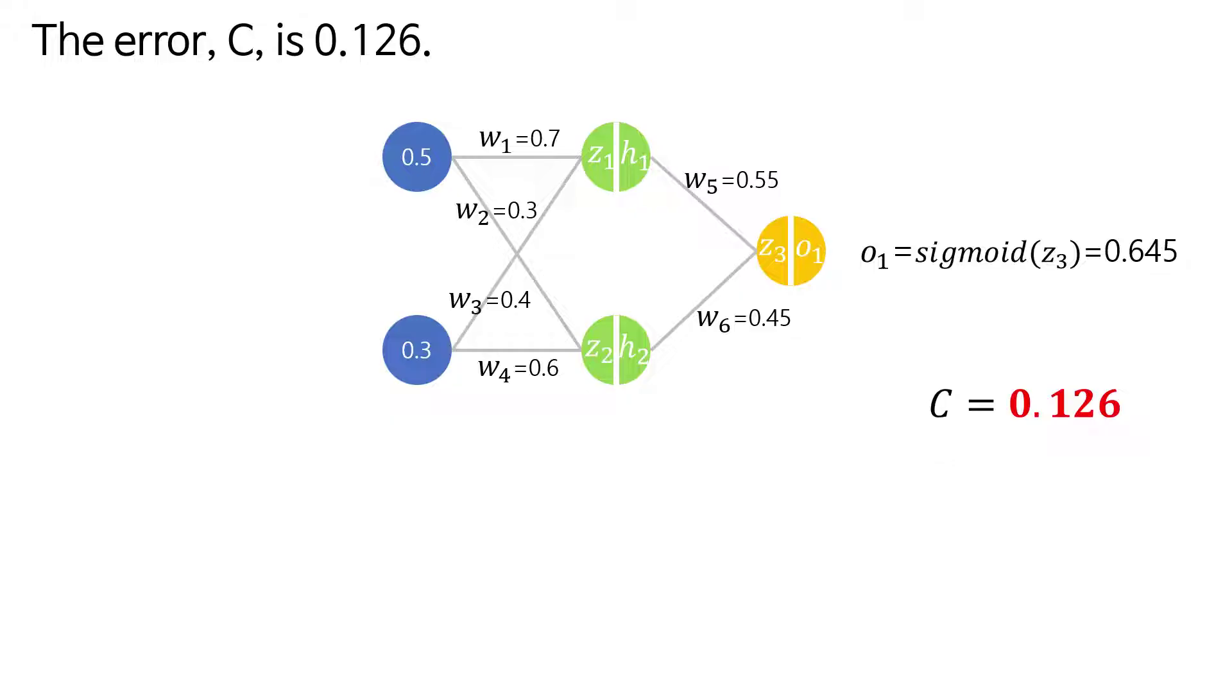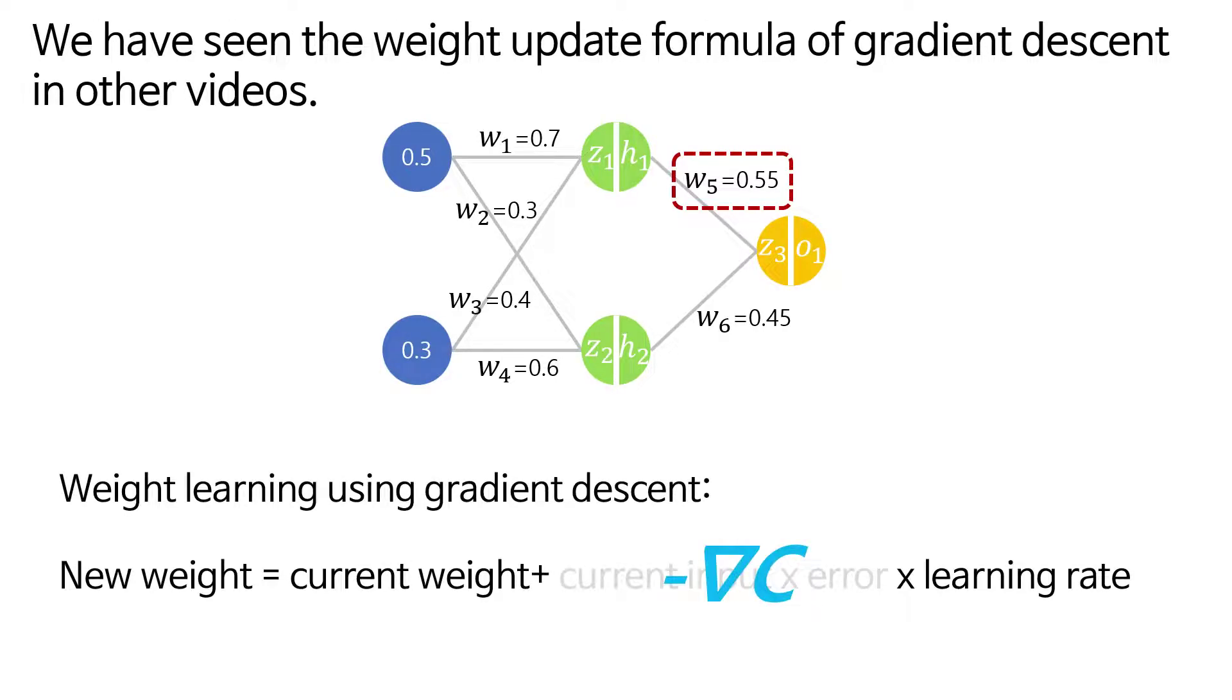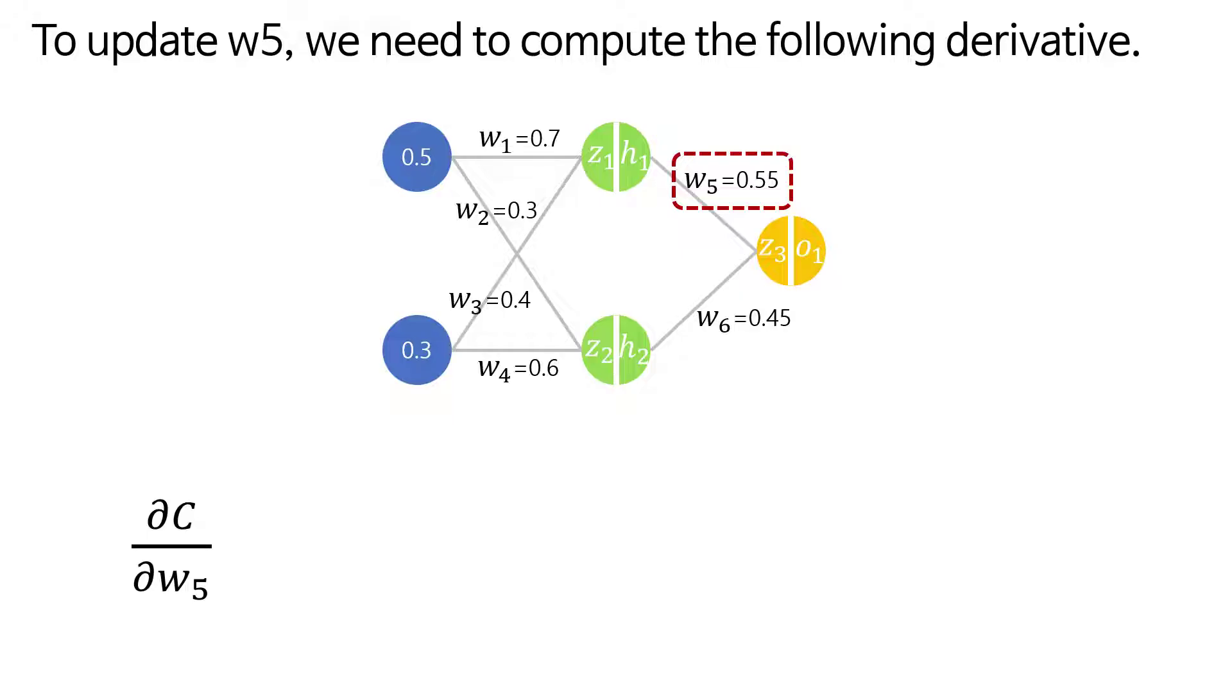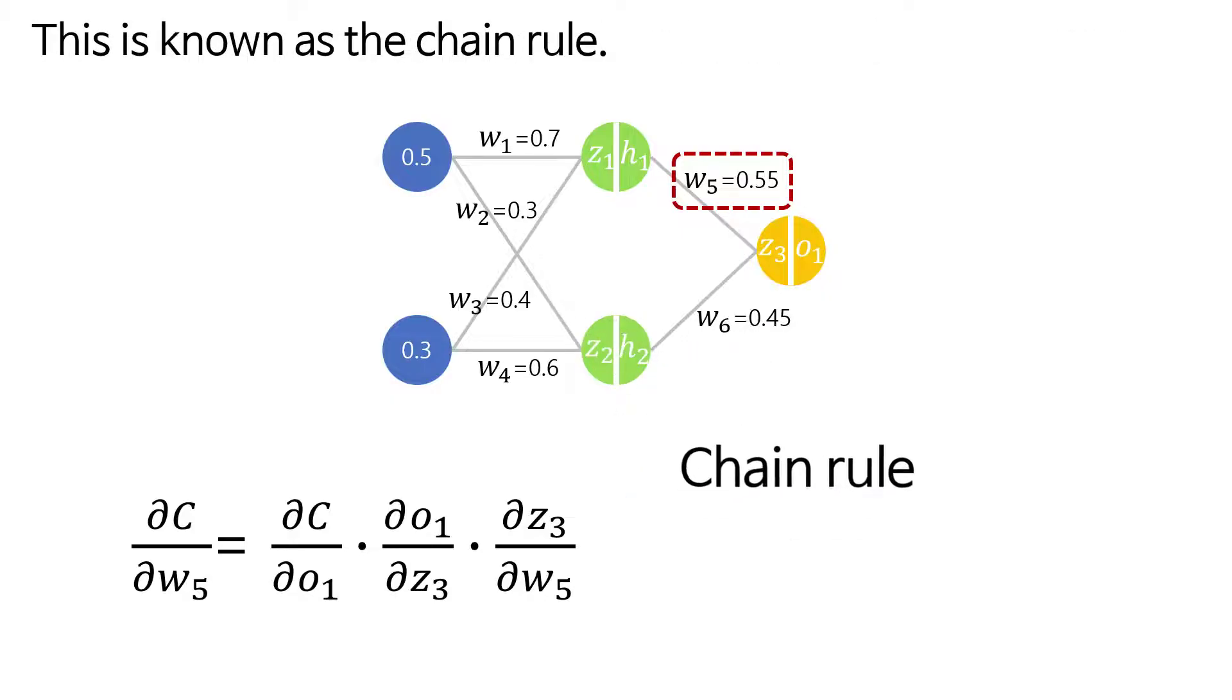Now the last step: backpropagation. Let's start by updating the weight w5. We have seen the weight update formula of gradient descent in other videos. For w5, we can change the partial derivative value as follows. To update w5, we need to compute the following derivative. However, since we can't directly calculate ∂c/∂w5, we use a trick. This is known as the chain rule.